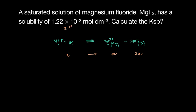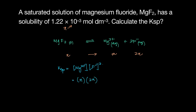Take the KSP expression — [Mg²⁺][F⁻]² — and substitute: Mg²⁺ is X and F⁻ is 2X, because 1 MgF₂ gives 2 F⁻ ions. So KSP = X × (2X)² = 4X³. Once you've expressed KSP in terms of X, all you have to do is plug in the solubility. That becomes 4 × (1.22×10⁻³)³, which gives the exact same answer as before.